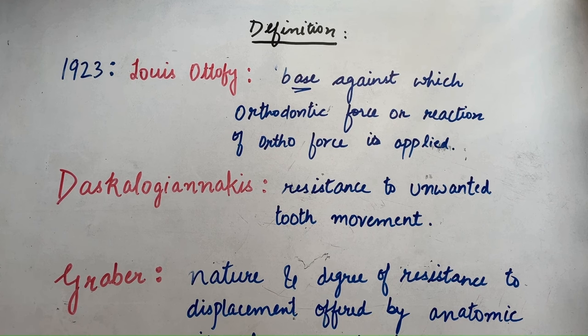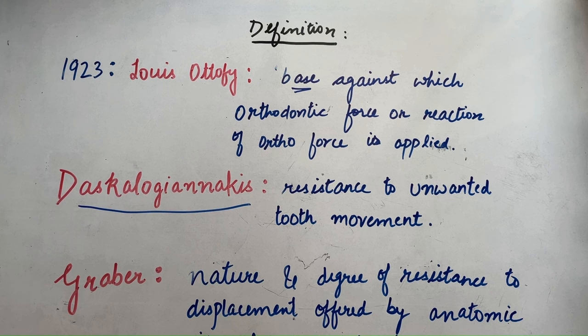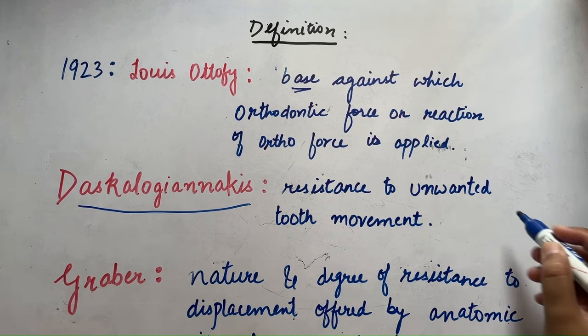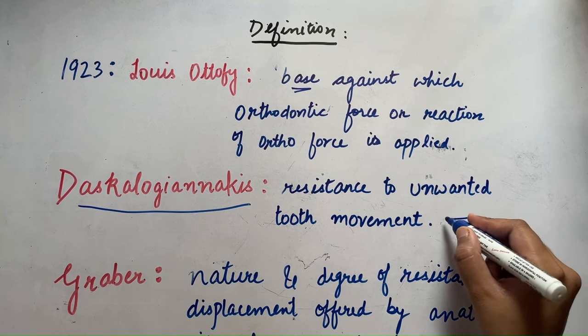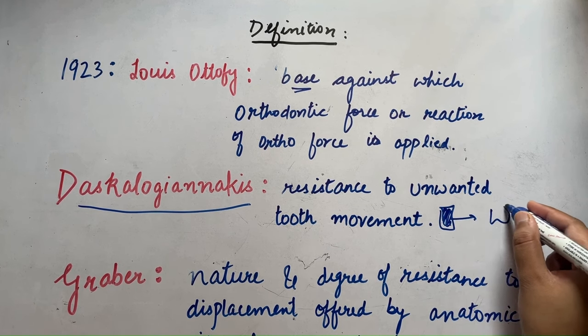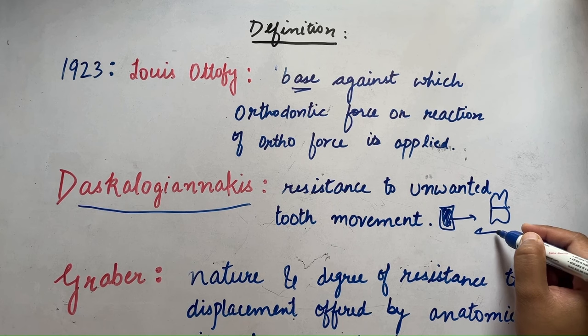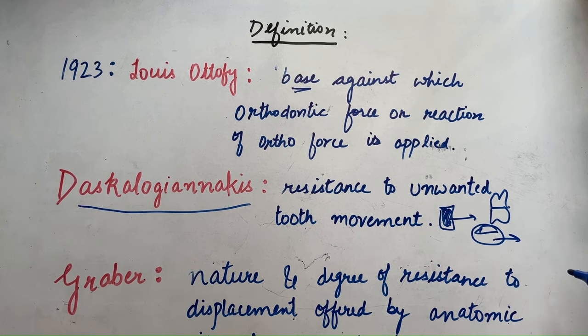The next scientist said anchorage is a resistance to unwanted tooth movement. For example, if we want to retract our incisors, we also have a reaction on our molar. So this unwanted movement, to prevent this unwanted movement, the measures taken are considered as anchorage.